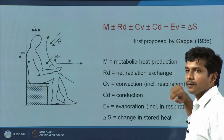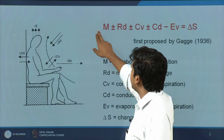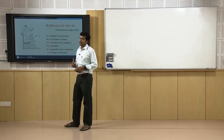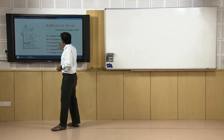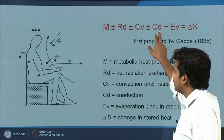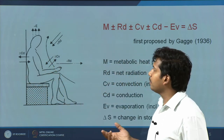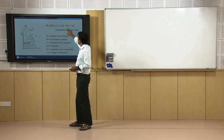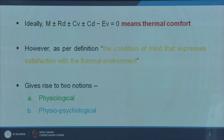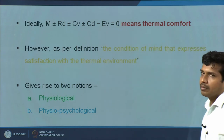If these things cancel each other, delta S will be zero. Metabolic heat production is always positive — there is no negative term; you keep producing heat. Net radiation can be positive or negative — you can gain or lose heat through radiation. Convection is again plus or minus. Conduction similarly is plus or minus, though a minimum amount of conduction happens mainly where you are in physical contact with objects. Evaporation is the final term. If you take an ideal scenario when all these terms cancel out, you get zero — which means there is thermal comfort, or more precisely, thermal equilibrium.